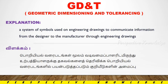GD&T is Geometric Dimensioning and Tolerance. GD&T is what we want to use. Basically, there is a drawing. There is information in the drawing, and there is a manufacturing industry.